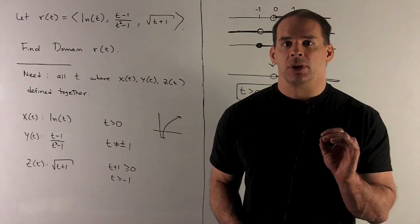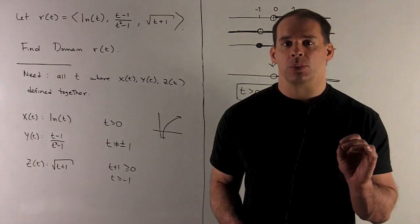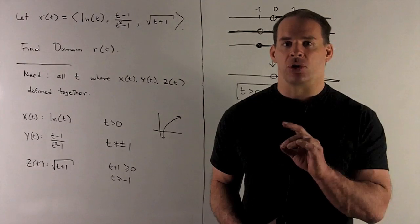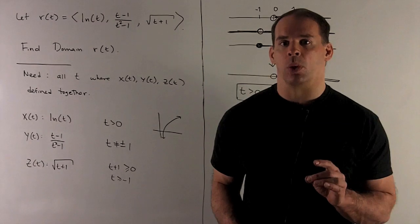All right, z(t), we have square root of t plus 1. So what we're going to do here is we just take t plus 1, set it greater than or equal to 0. And then that gives me t greater than or equal to minus 1.